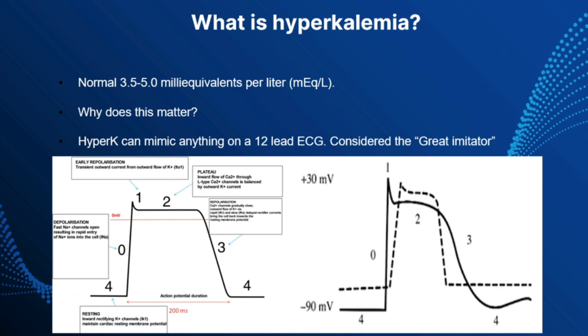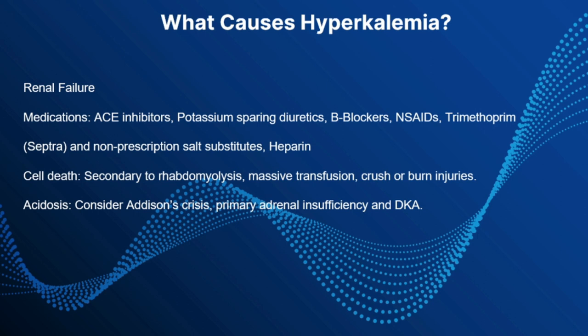When you think of what causes hyperkalemia, the most obvious one everyone thinks of is renal failure. But not a single hyperkalemic patient I've ever had has been on dialysis. Here are some ways hyperkalemia can actually occur: ACE inhibitors, potassium-sparing diuretics, beta blockers, NSAIDs, and heparin.